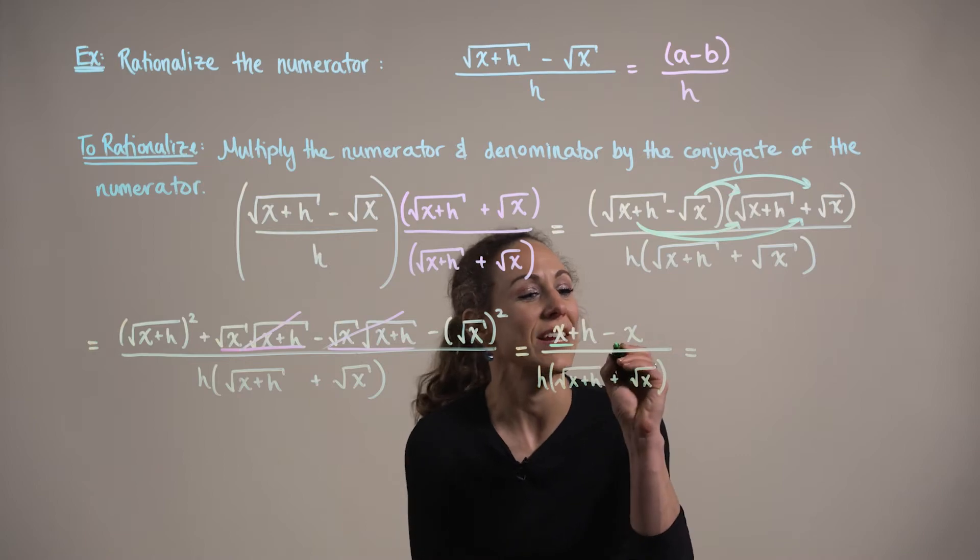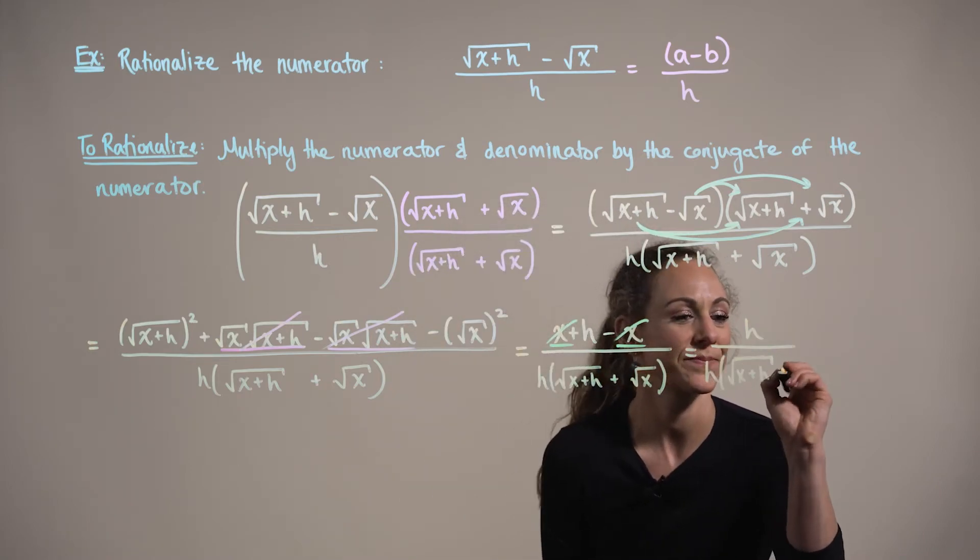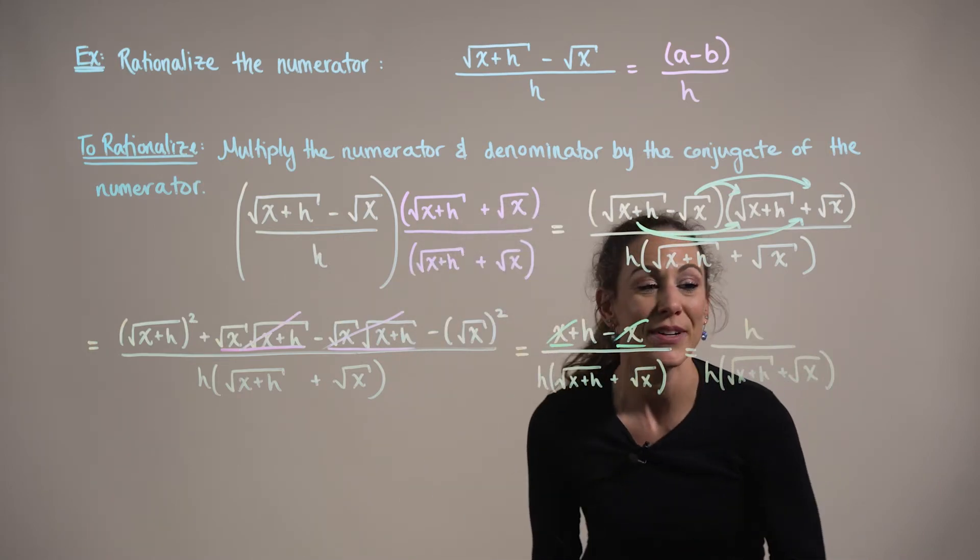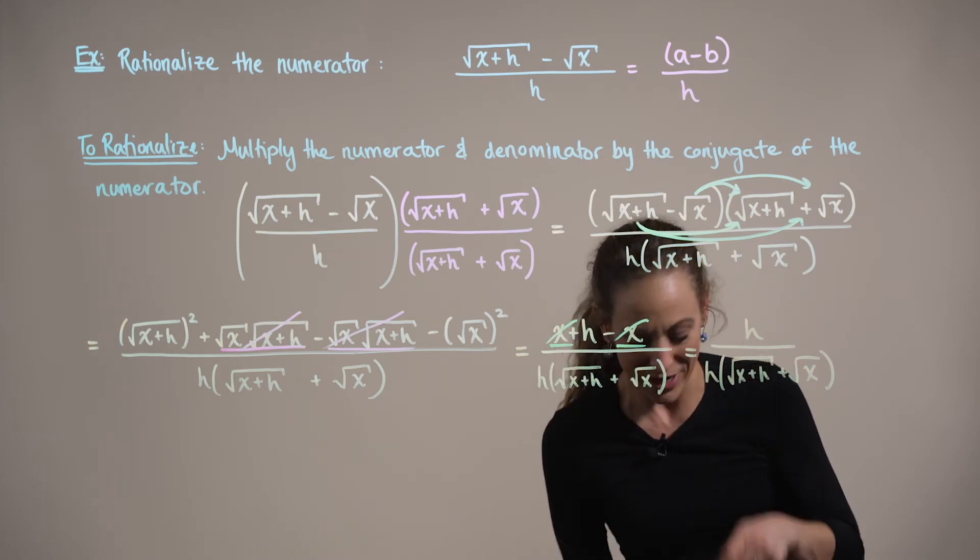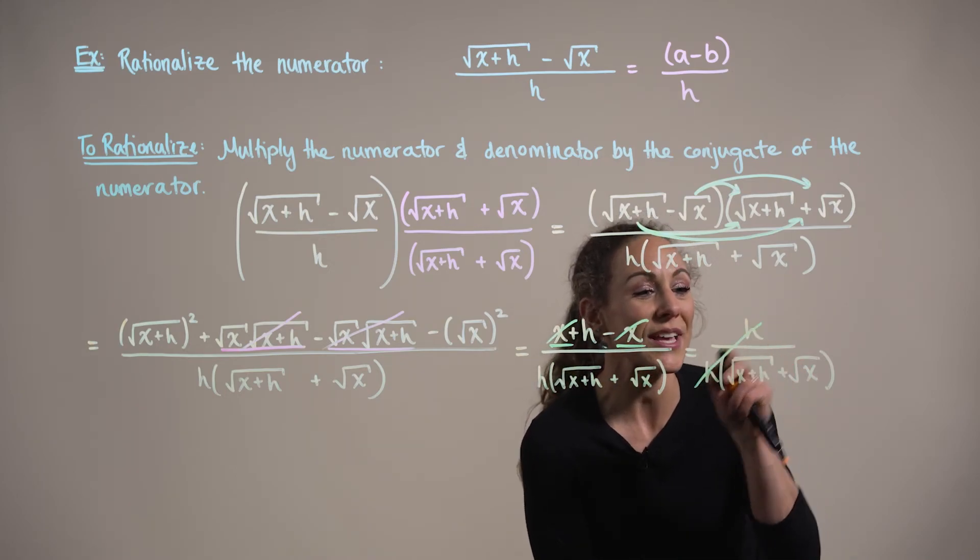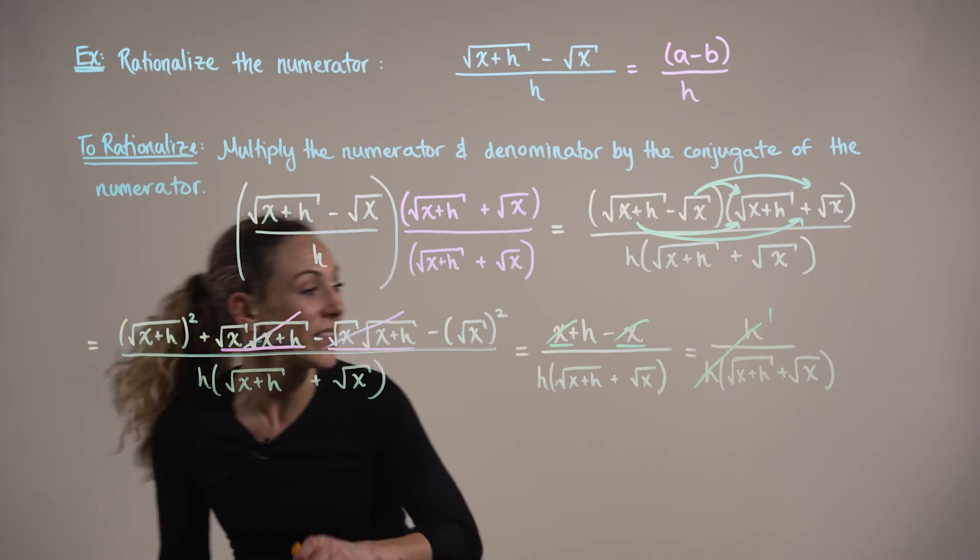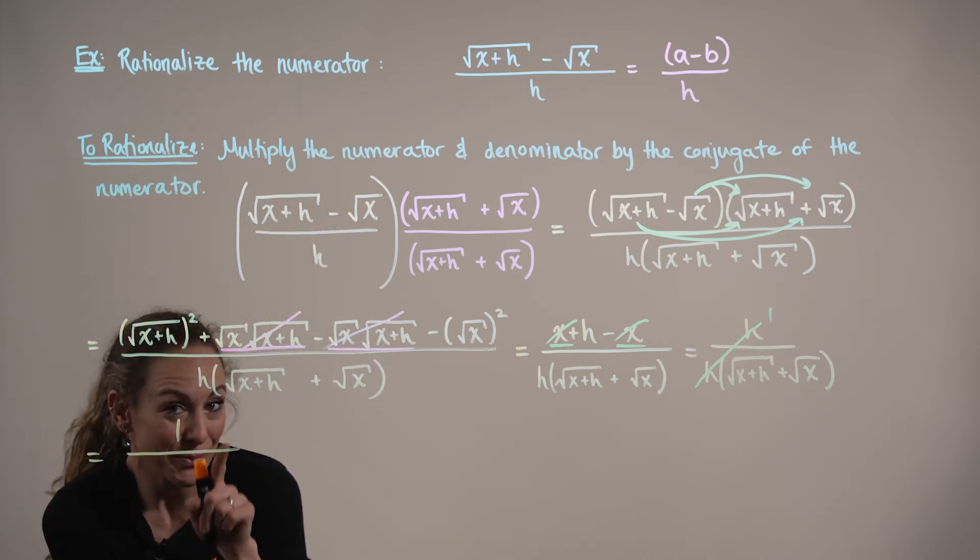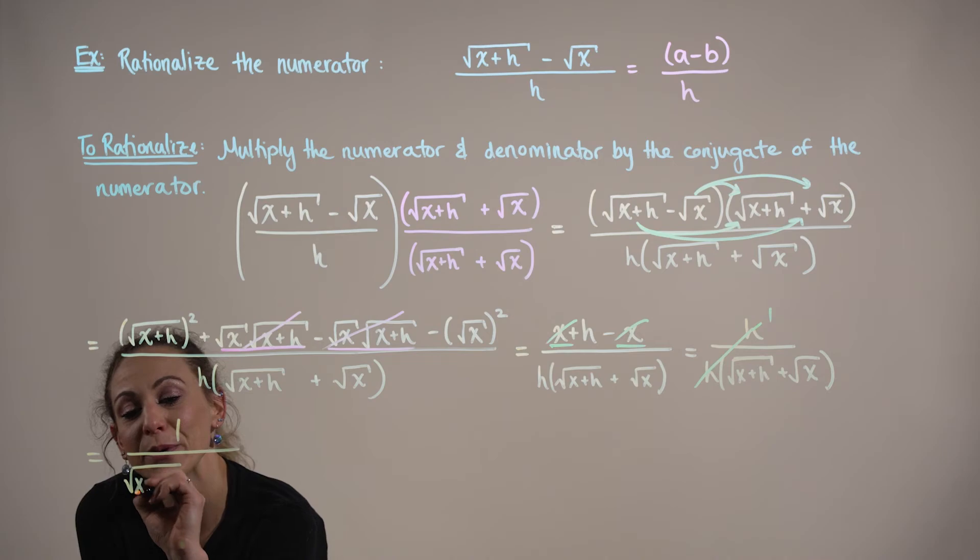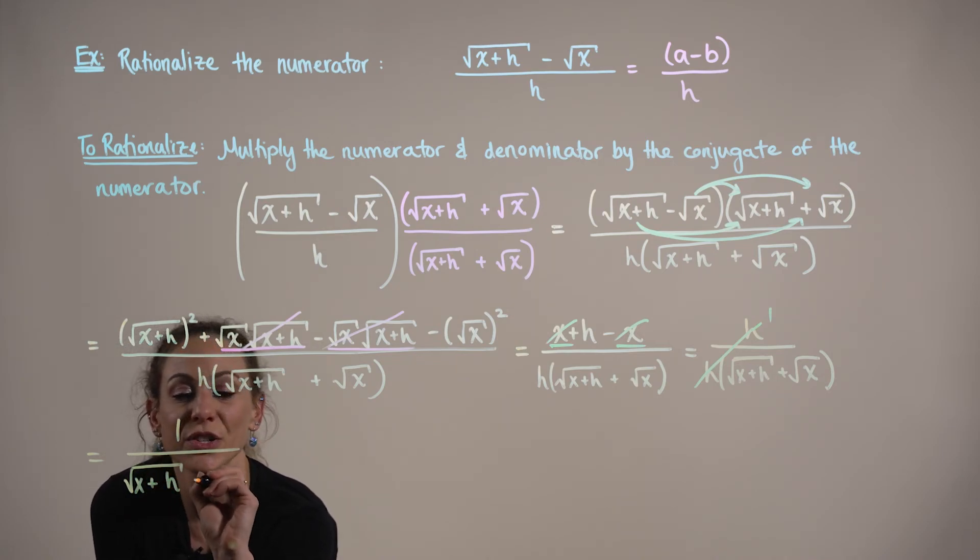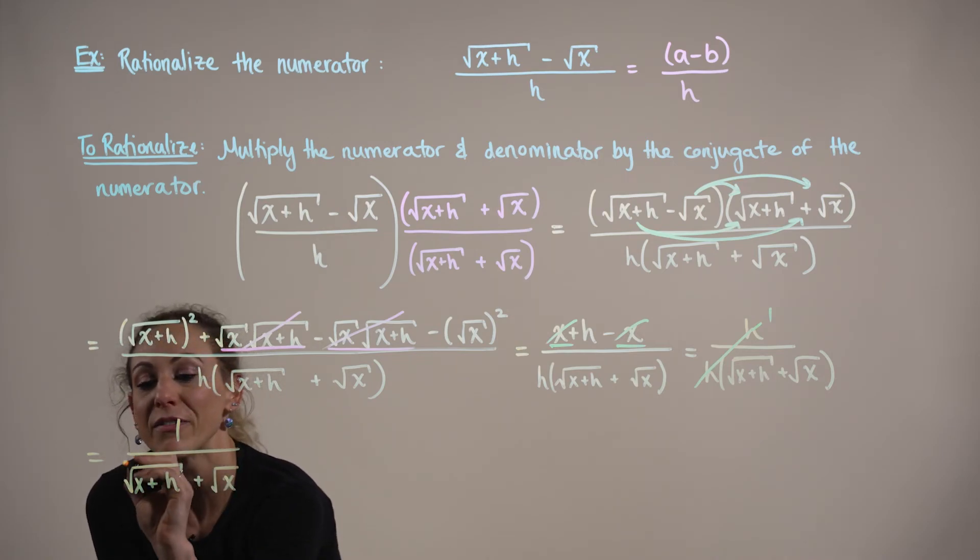And we have a final simplification. So our x's cancel out, leaving us with just an h in the numerator and denominator. So those h's cancel out and we're left with the rational expression 1 by the square root of x plus h plus the square root of x.